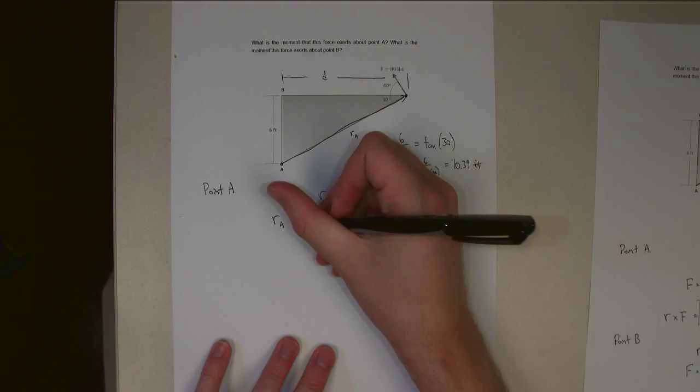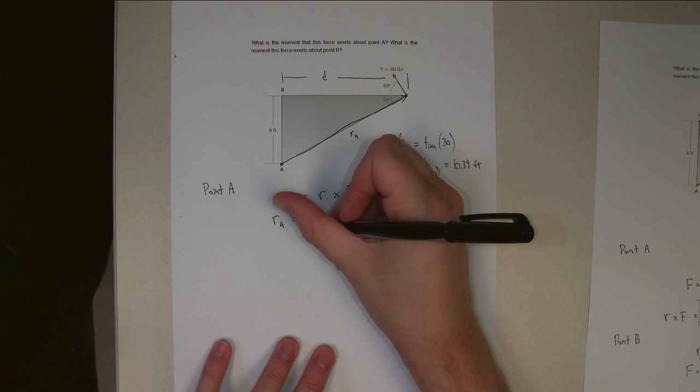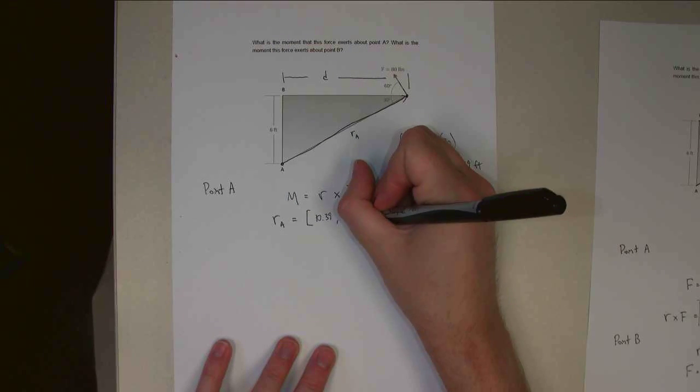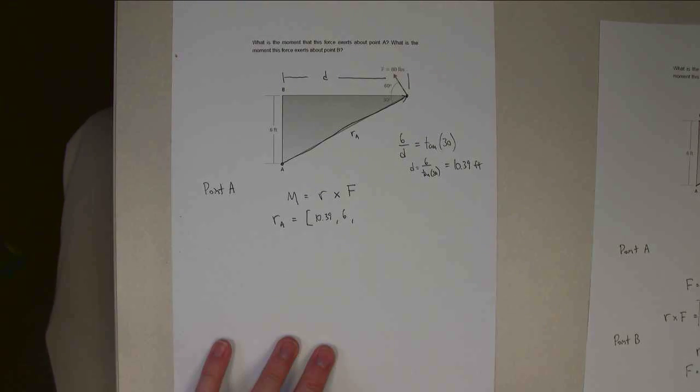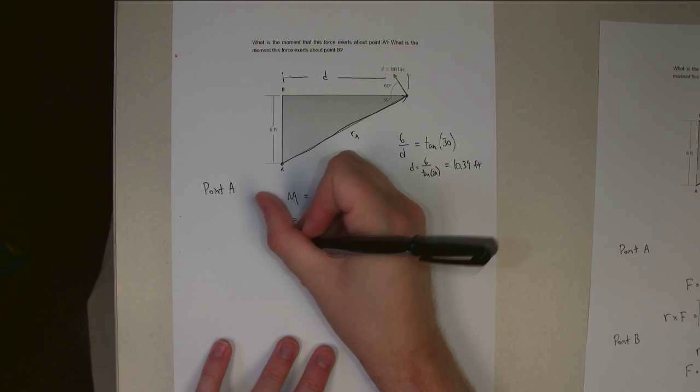So R A, I go in the X direction, I go over 10.39 feet. In the Y direction, I go up 6 feet. In the Z direction, which is out of the page, I'm going to go 0 feet. Next is the F vector.